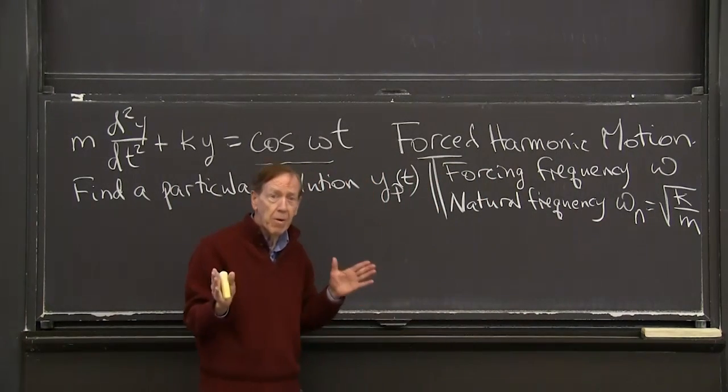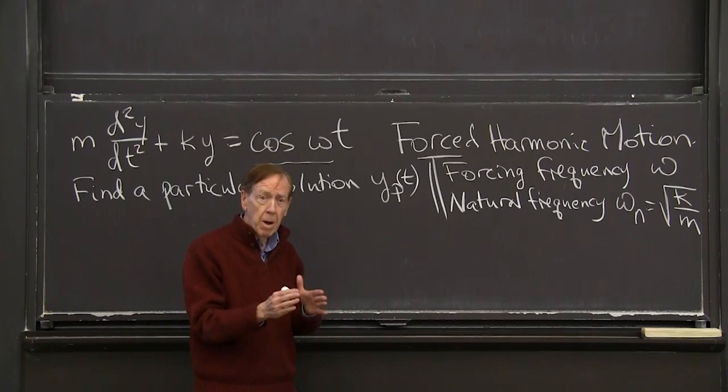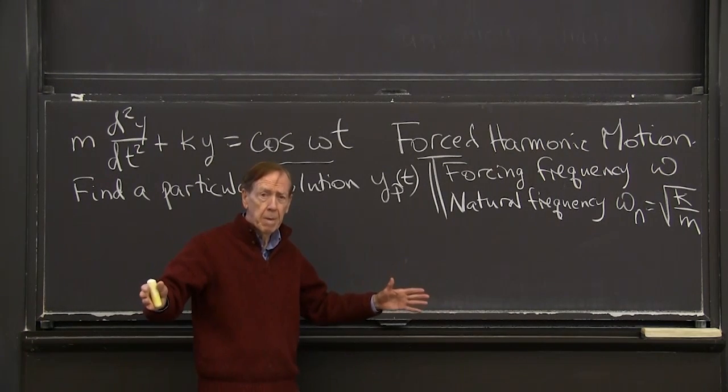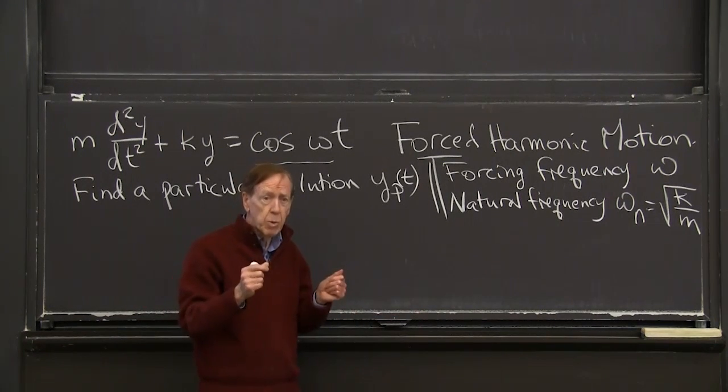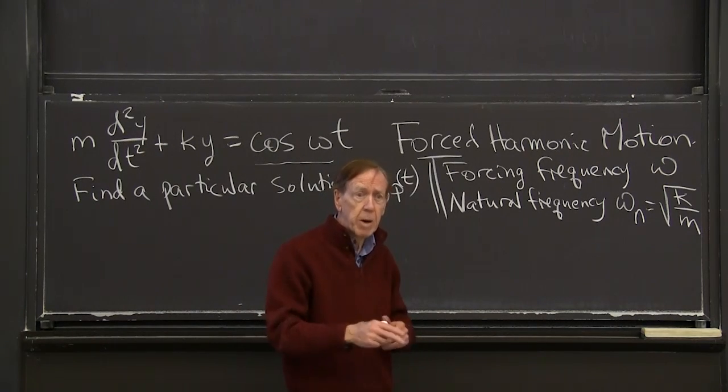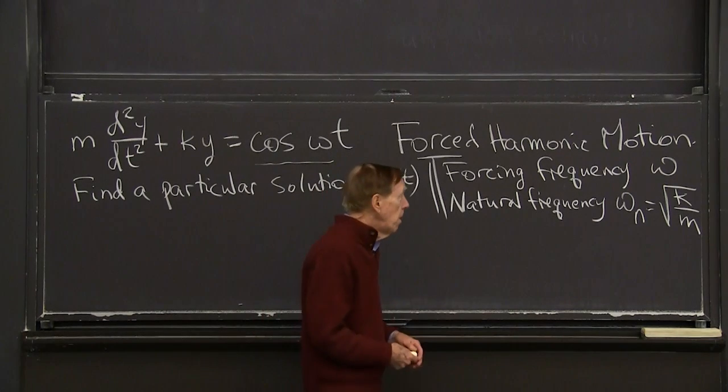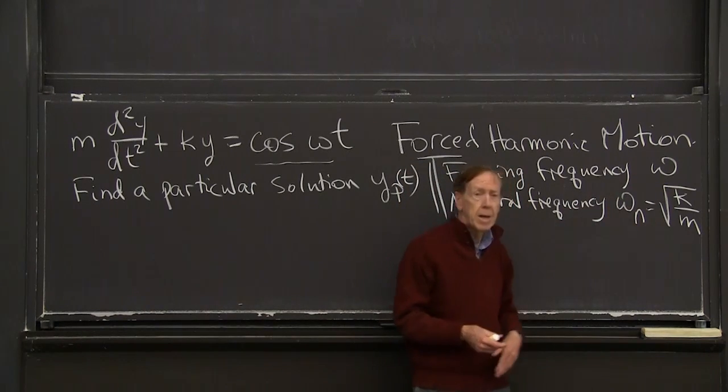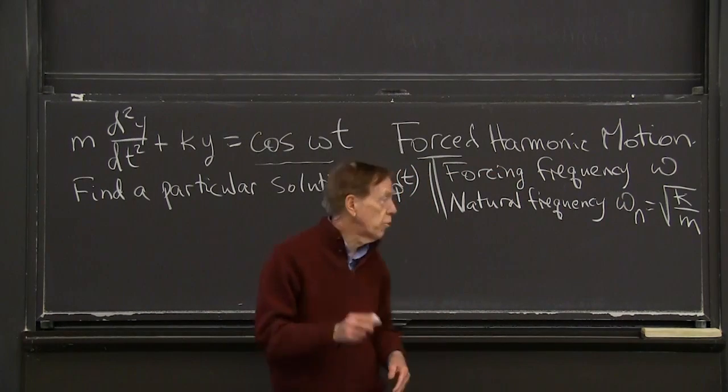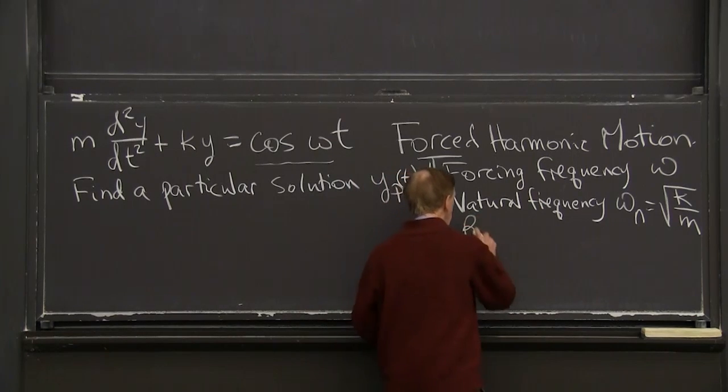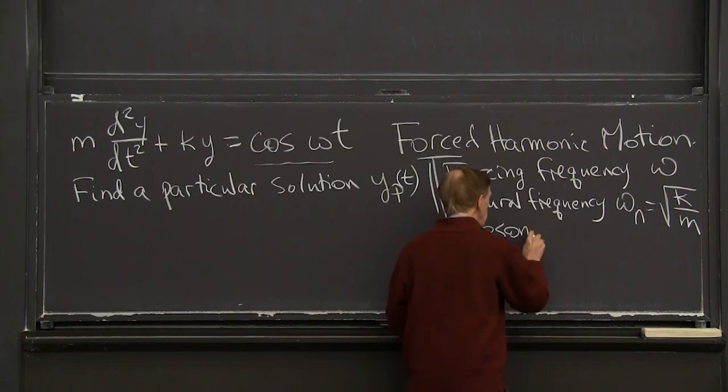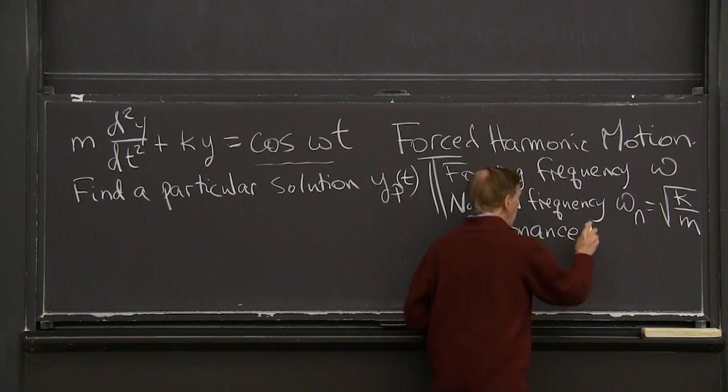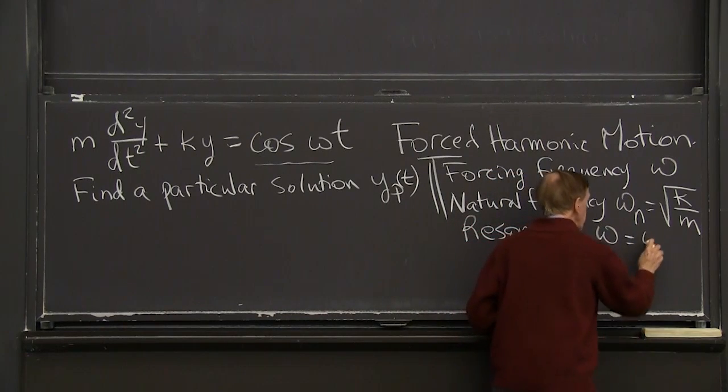It's very important. Are those close? Are those well separated? That governs whether the bridge that you're walking over oscillates too much and eventually falls. Or in the extreme case, are they equal? If omega n is equal to omega, that's called resonance. Let me put that word in, resonance, when omega equals omega n.